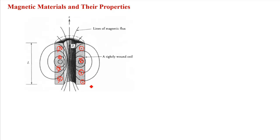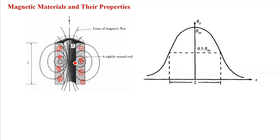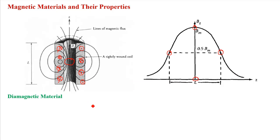Outside the solenoid, in air, there is very little magnetic flux strength. If we plot magnetic flux density versus length of the solenoid or toroid, we find it is maximum (Bm) at the middle and gradually decreases towards the ends, eventually reaching zero. This is how the solenoid works.